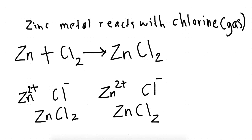Now we've written down the equation. We need to balance it — this is where you look at the coefficients. You count how many atoms you have on each side. We have one zinc on the left-hand side and one zinc on the right-hand side. We have two chlorines on the left and two chlorines on the right. The equation is balanced. Now for something more complex: carbon reacting with oxygen.